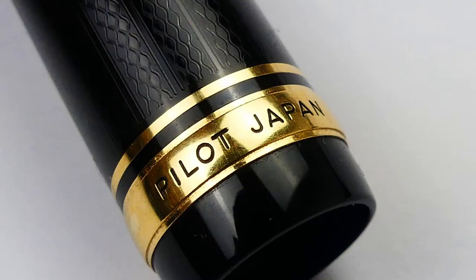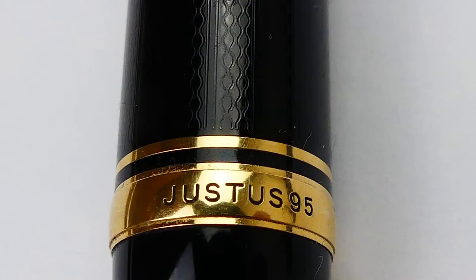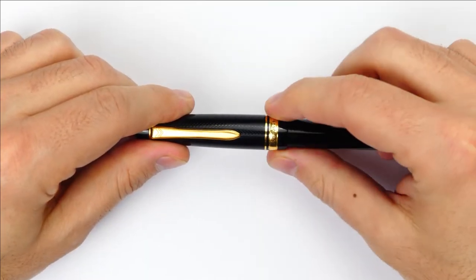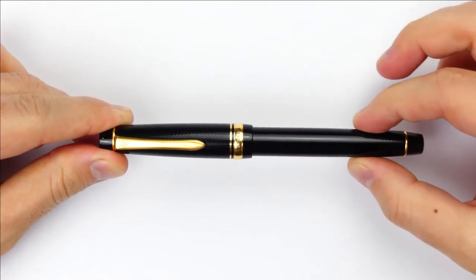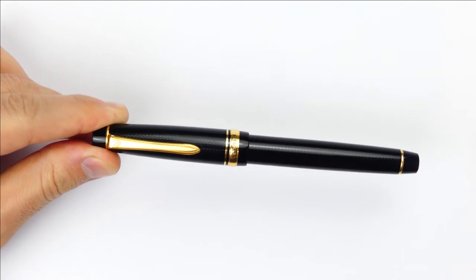The cap angles up until this double band. The biggest one is raised and shows Pilot Japanese on one side and Justice 95 on the other. There is a small step down to the barrel, which is straight up to this point, and then it tapers down slightly.